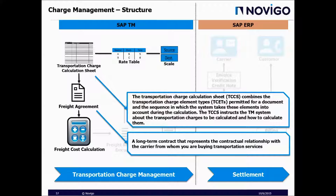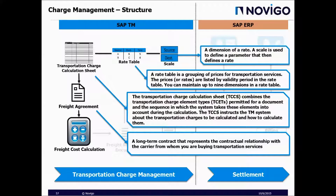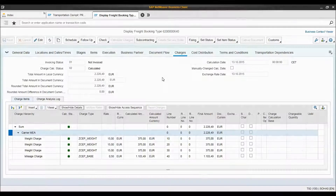The TCCS instructs the TM system about the transportation charges to be calculated and how to calculate them. The transportation charge calculation sheet consists of one or more rate tables. The rate table is a grouping of prices for transportation services. The prices or rates are listed by validity period in the rate table. We can maintain up to nine dimensions in a rate table. The rate table consists of scales — a dimension of a rate. A scale is used to define a parameter that then defines a rate.